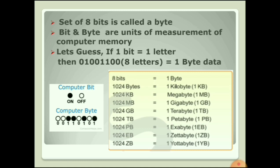If we collect 1024 bytes, that means 1024 letters, then it will become 1 kilobyte of data. The short form of kilobyte is KB. The next measurement is MB — if we collect 1024 KB then it becomes 1 megabyte, or 1 MB. Next is GB — if we collect 1024 MB it becomes 1 gigabyte, or 1 GB. Then terabyte: if we collect 1024 GB it becomes 1 terabyte, or 1 TB.